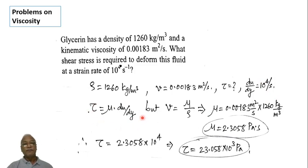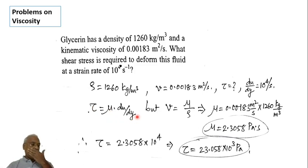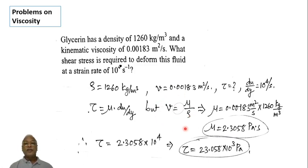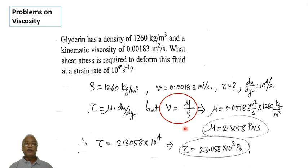The equation we use is tau equals mu into du/dy — the standard Newton's law of viscosity — where tau is shear stress and mu is the dynamic coefficient of viscosity. The relation between kinematic and dynamic viscosity is: nu equals mu divided by rho.